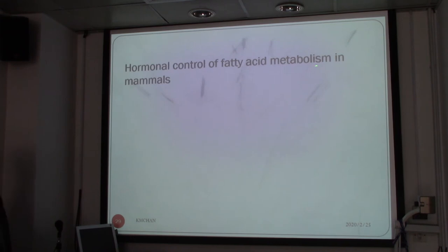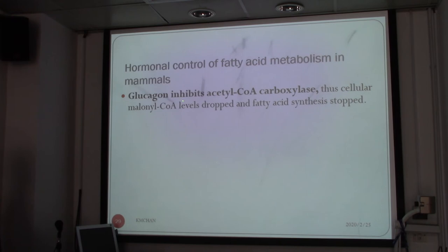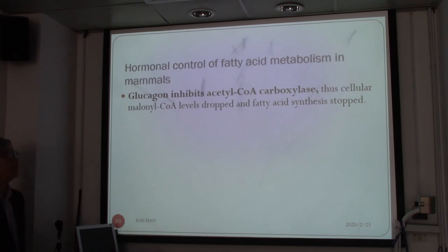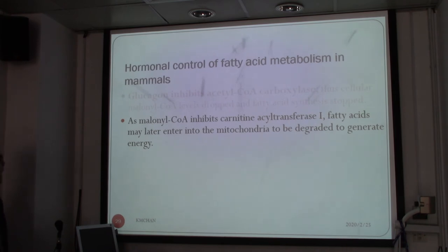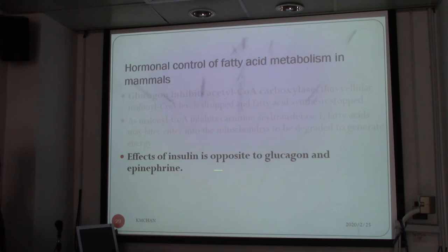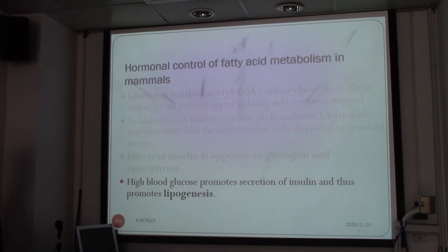Regarding hormonal control of fatty acid metabolism in mammals: glucagon inhibits acetyl-CoA carboxylase, so cellular malonyl-CoA levels drop and fatty acid synthesis stops. Glucagon counteracts the effects of insulin, including lipid formation. When malonyl-CoA drops, it releases inhibition of carnitine acyltransferase I, so fatty acids can enter the mitochondria and be oxidized to produce energy. The effects of insulin are opposite to glucagon and epinephrine — high blood glucose promotes secretion of insulin and thus promotes lipogenesis.